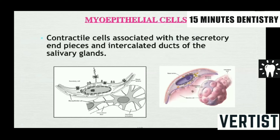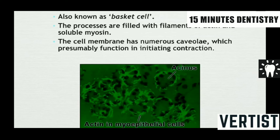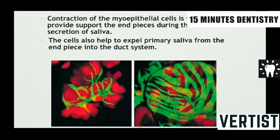Myoepithelial cells are contractile cells associated with the secretory end pieces and intercalated ducts of the salivary glands. They are referred to as basket cells. Like muscle cells, they contain contractile filaments such as actin and myosin. When they compress the acini, the secreted saliva is expelled. The contraction of myoepithelial cells brings about the expulsion of primary saliva from the end pieces into the ductal system.